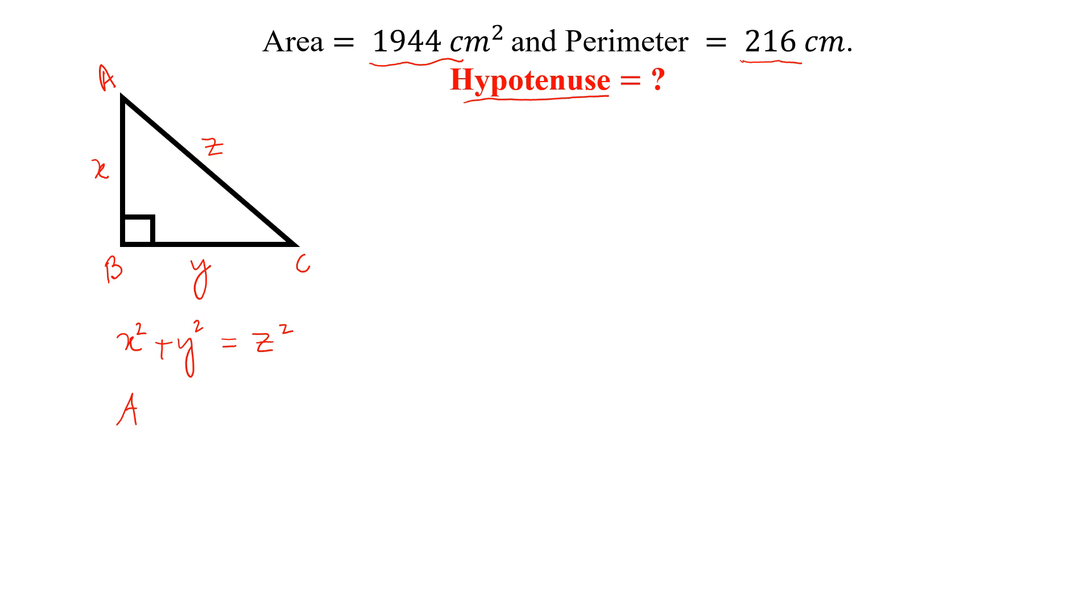And area of the right angle triangle is xy divided by 2. So this is equal to 1944. Multiplying both sides by 4, we will get 2xy is equal to 7776.